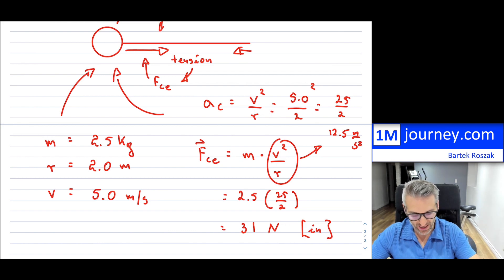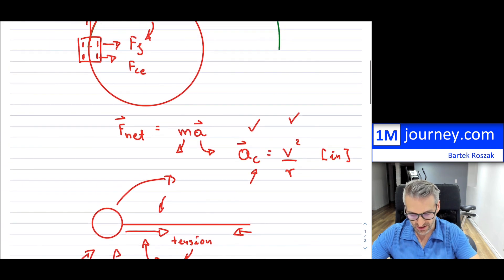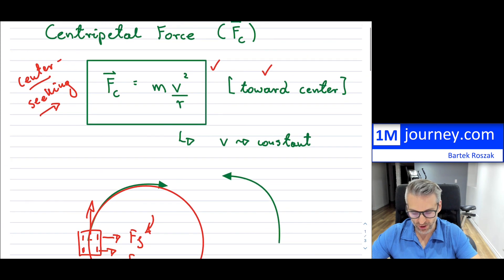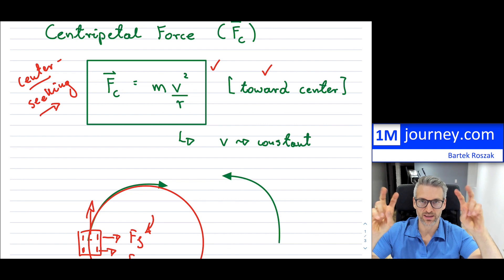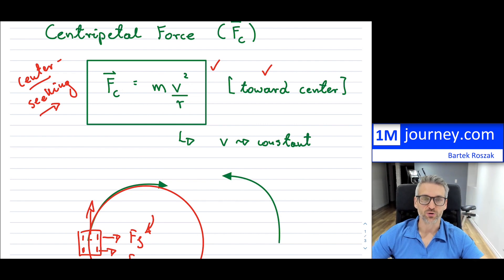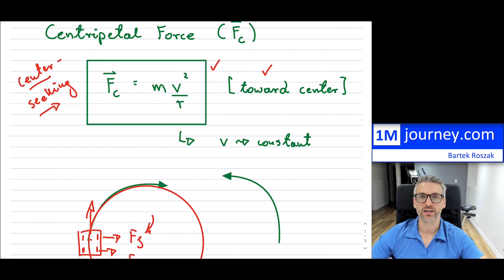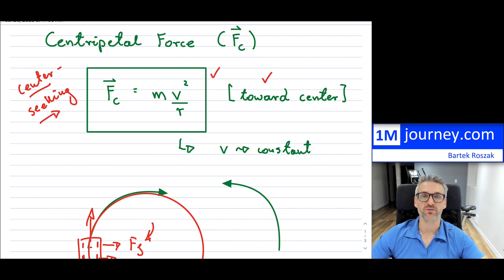So that's centripetal force and how to calculate it. The equation is simple. If you really want to understand where it comes from, I encourage you to click the link I mentioned about centripetal acceleration — from there it's easy to derive. Once you have centripetal acceleration, multiply by mass and you have your centripetal force. Thanks for watching. I hope this gives you a sense of centripetal force. It's not a hard equation to apply.